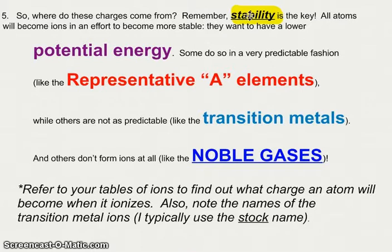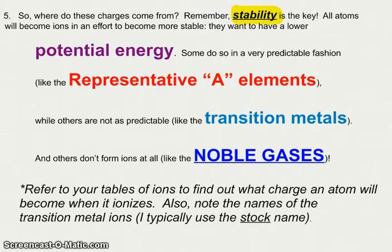Again, stability is the key. And so we are looking for the atoms to have a lower potential energy. When something is unstable, it has a high potential energy, like a spring that's really smashed together. It has the ability to do something amazing. And so we want everything to become more stable, and that's why we're forming these ions. The representative A elements, they are going to ionize in a more predictable fashion. Remember, that's the S and P block on our periodic table, groups 1 and 2 and 13 through 18. The transition metals and intertransition metals are not so predictable. They can form multiple ions, as we'll see here in a minute. And of course, the noble gases do not form ions. They are stable.